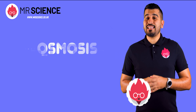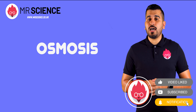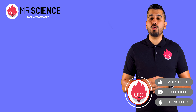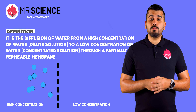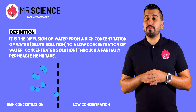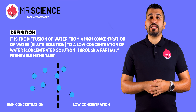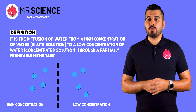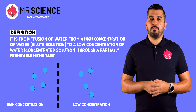Our second type of movement is osmosis, which is a type of diffusion involving water only. This is where water moves from an area of high concentration to an area of low concentration through a partially permeable membrane.